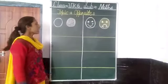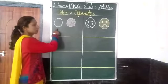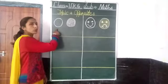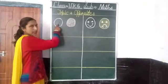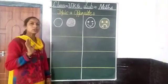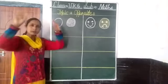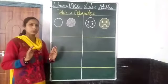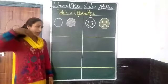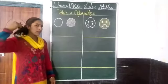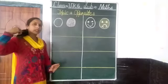Piyare bachyo, aaj hum kuch naye opposite words ko sikhenge, jaysay black. Black means kala. Do you know black? Aapne kala rung dekha hai na — jab hum raat ko baahar andhere mein hote hain, to ek dam kala andhera hota hai. Aur aapki jo hair hoti hai, mostly black color ki hoti hai, kisi ki brown bhi hoti hai.